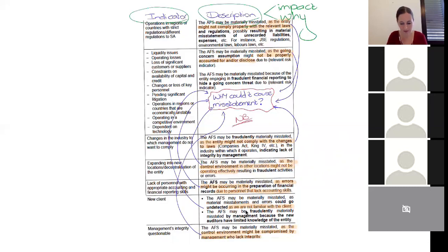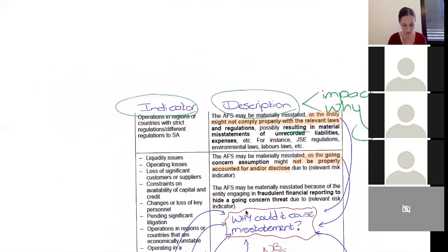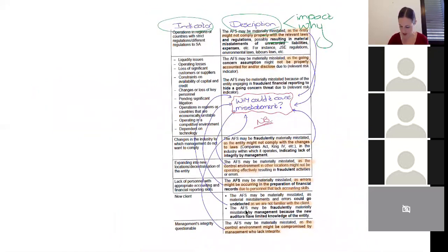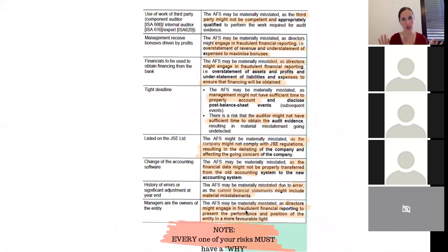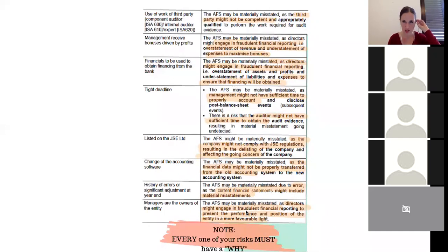And I've kind of highlighted in there, your description contains your impact and your why. And I've kind of indicated the why in orange. So the first one, for example, the financial statements may be materially misstated as the entity might not comply properly with the following laws, resulting in, there's your impact, resulting in material misstatements of unrecorded liabilities and expenses. So why are you worried? Why are you concerned? What was it about this thing that raised that? And I've got, obviously, it's not a comprehensive list, but it kind of gives you an indication of what you need to do. Most of this, all of this, by the way, is at financial statement level risk. It gives you a bit of an indication of what it is that you need to work on. What is it that you need to cover?